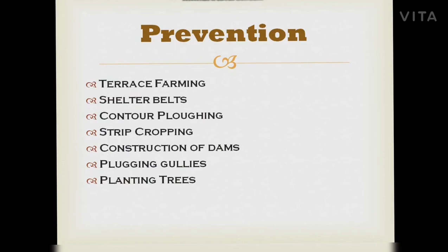Ways to prevent soil erosion: first, terrace farming — on hilly slopes, terraces act as barriers and prevent soil from being washed away by running water. Second, shelter belts — farmers plant trees in several rows to check wind erosion; these are known as windbreaks. Third, contour plowing — plowing along the contours of a slope prevents soil from being washed away by wind or surface runoff. Fourth, strip cropping — crops are grown in alternate strips of land to check the impact of winds. Fifth, construction of dams — dams built in the upper courses of rivers help control soil erosion. Sixth, plugging gullies — gullies are filled with silt during heavy rains. Seventh, planting of trees along the edges of fields and on steep slopes prevents soil erosion and enhances the soil's capacity to retain water.